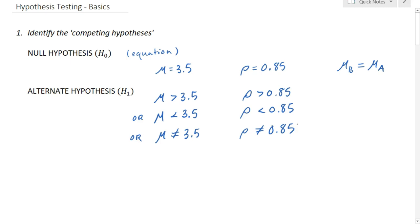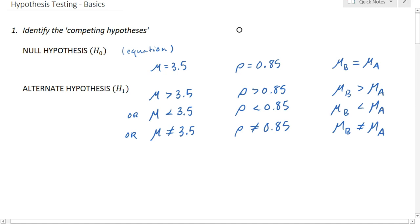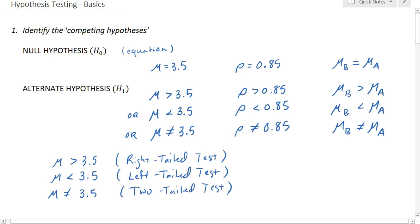If we start with a null hypothesis that two means are the same, the alternate could be that the mean before is more than, less than, or simply not equal to the mean after. An alternate hypothesis is traditionally given in the form of an inequality or a not-equal-to statement. If the alternate is mean greater than 3.5, we're doing a right-tailed test; if less than 3.5, a left-tailed test; and if not equal, a two-tailed test.